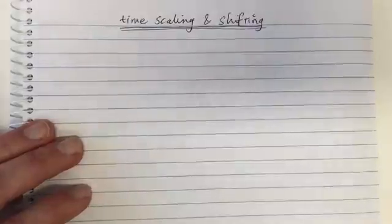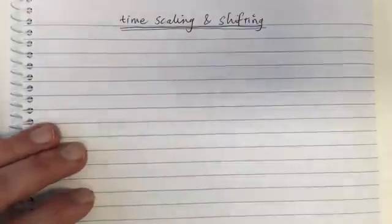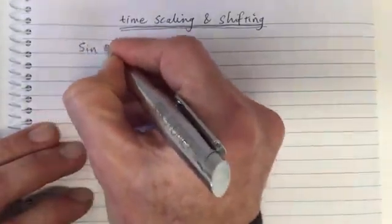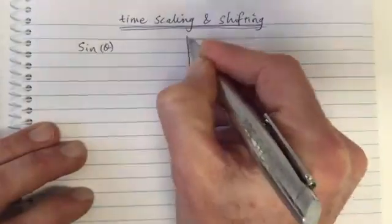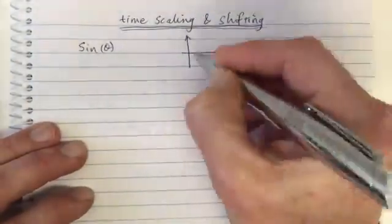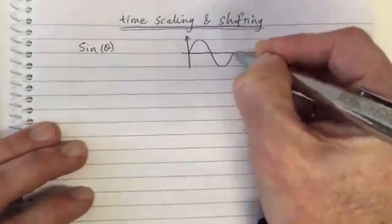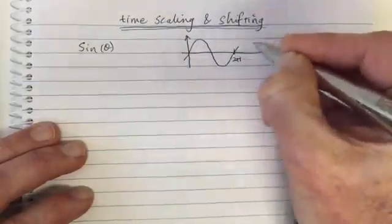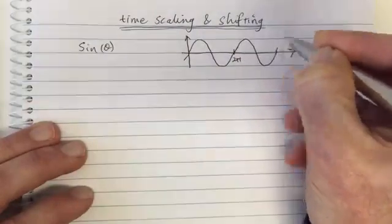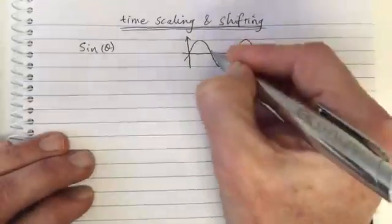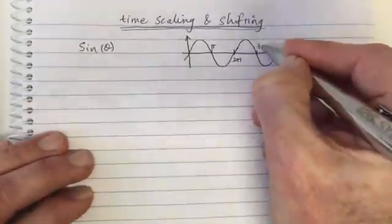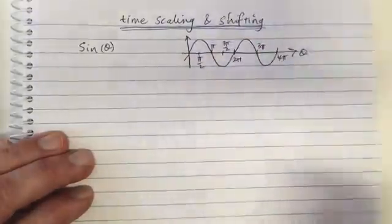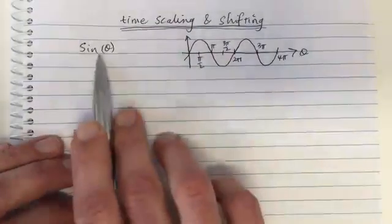Here we're going to look at time scaling and time shifting, and in particular we're going to look at it for the sinusoidal waveform. First I'm going to plot the sine theta function as a function of theta. Here's theta, and sine theta is this waveform here. It keeps going beyond 2 pi, but we'll draw it up to 4 pi. This is pi, 3 pi, pi on 2, and 3 pi on 2. This is a function of theta.